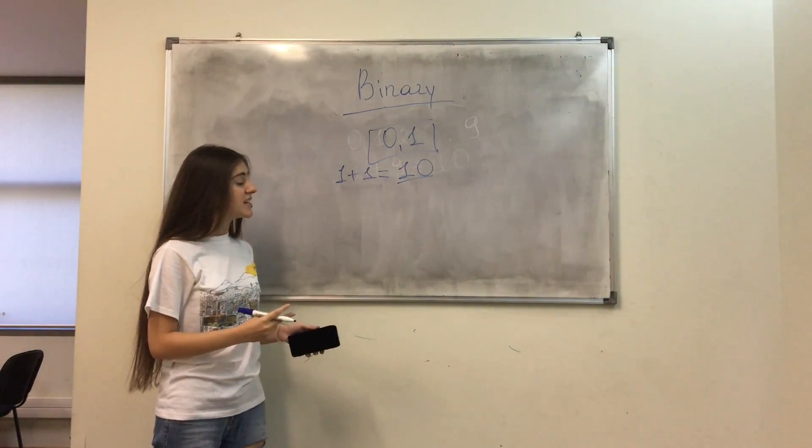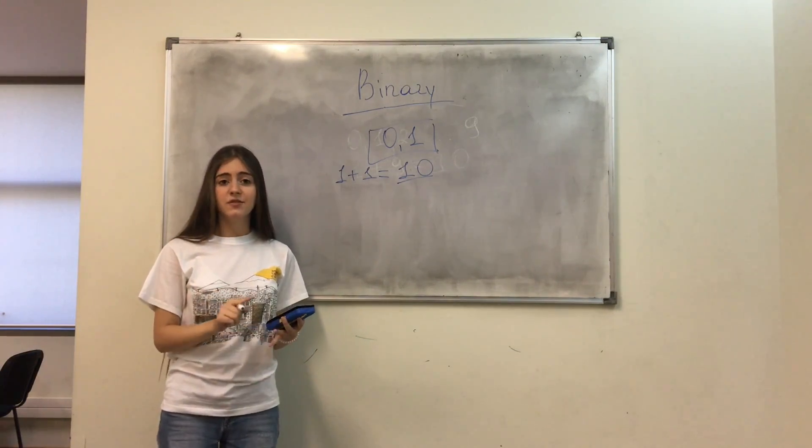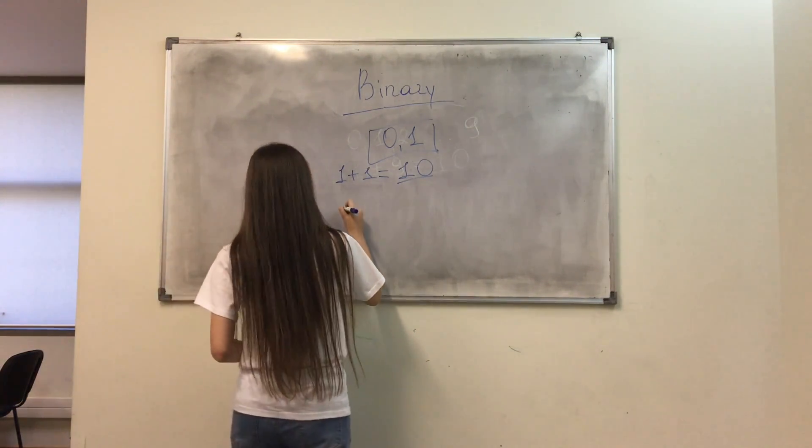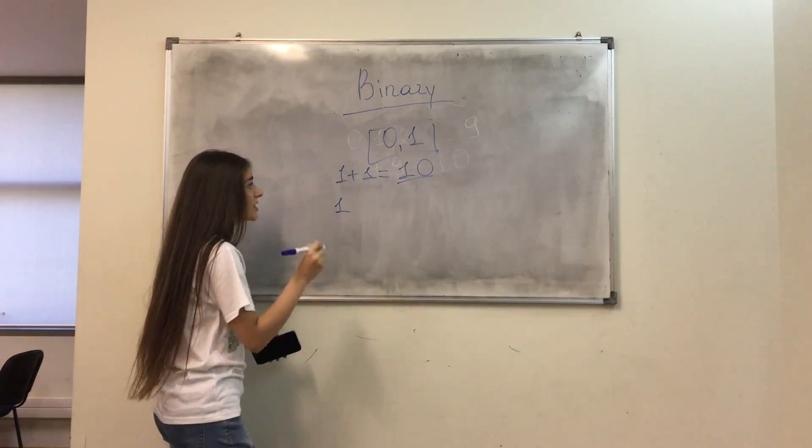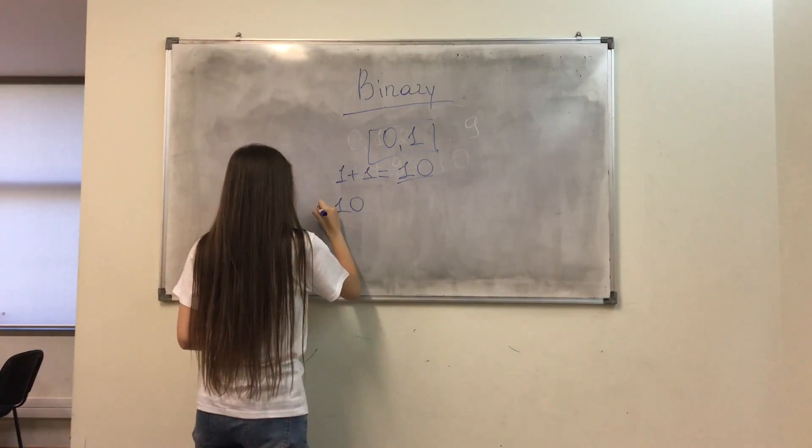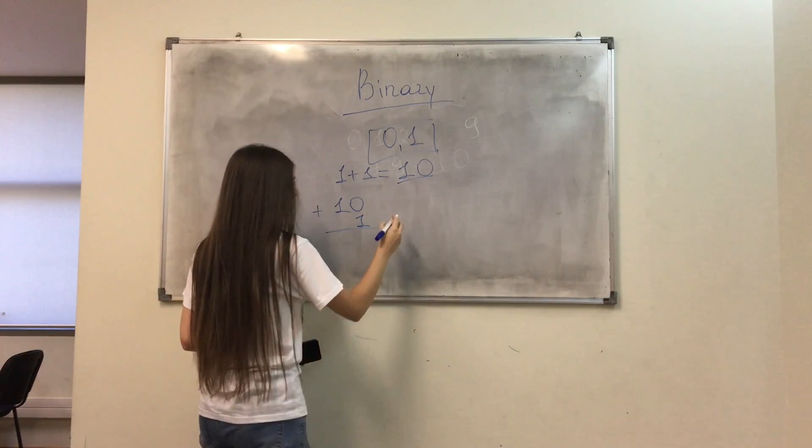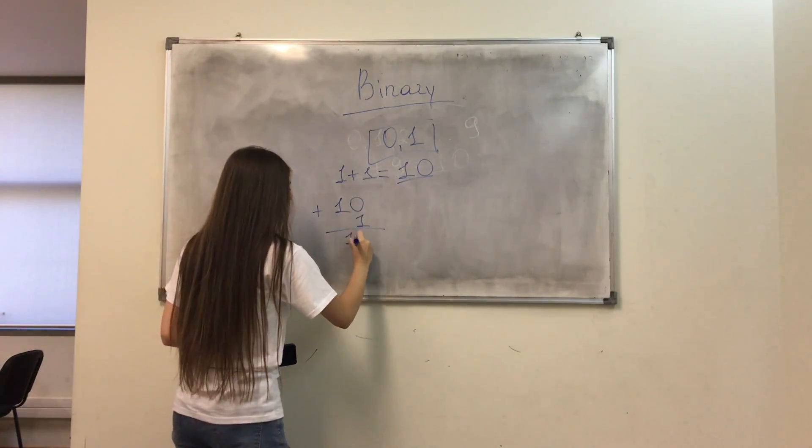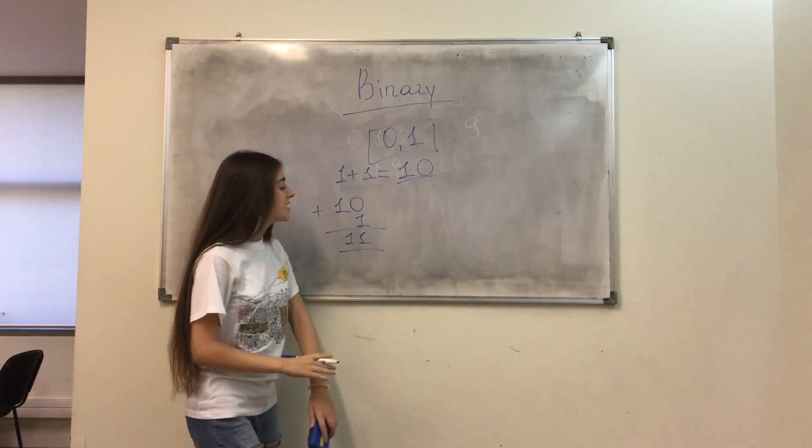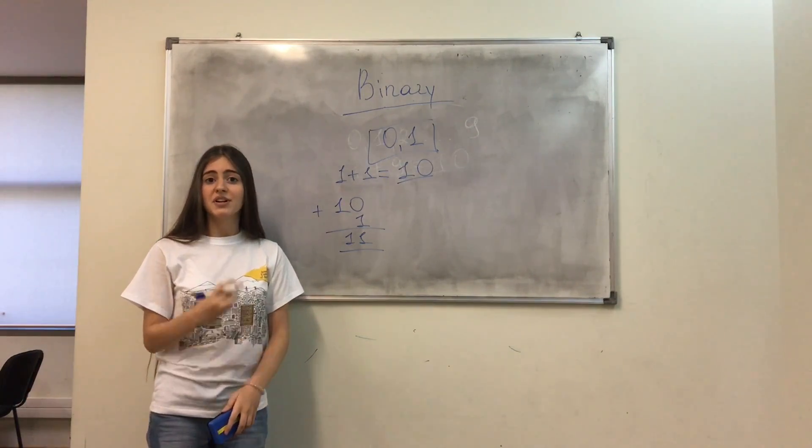Let's continue this for the number 3 and 4 to better understand it. So if I want to get the number 3, I should add 1 to the number 2. I get 11 and 11 represents the number 3.